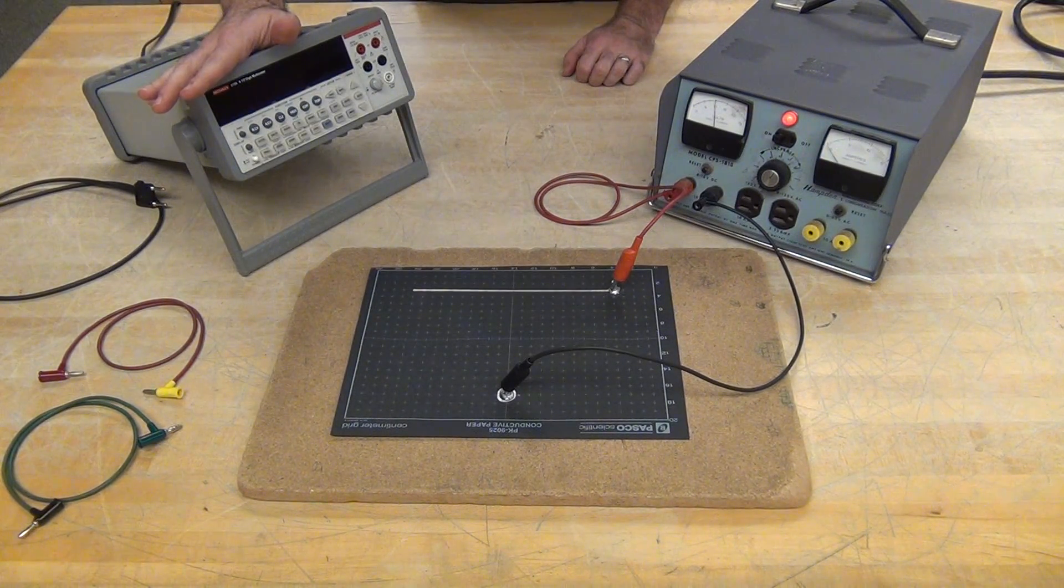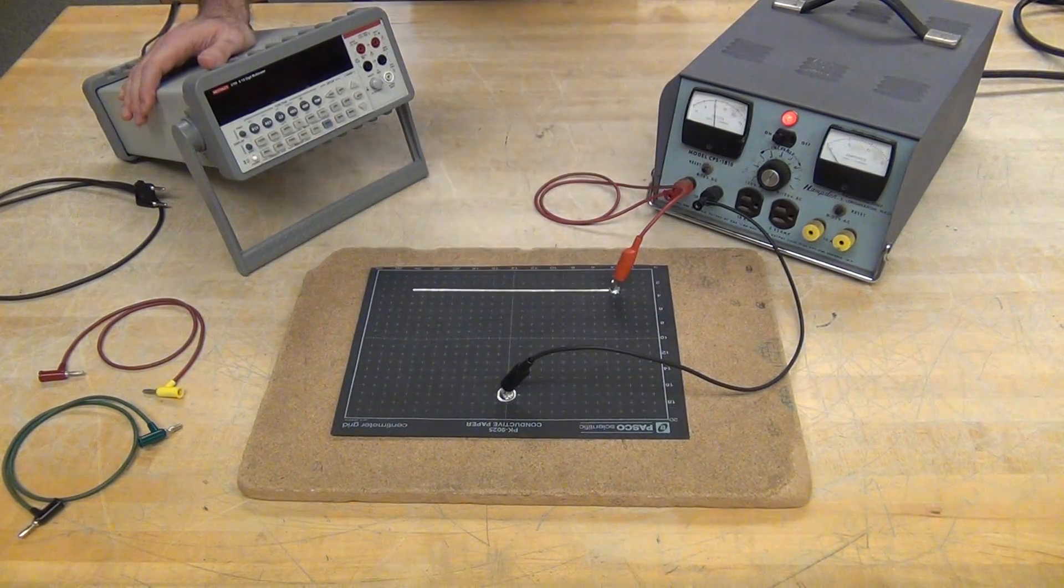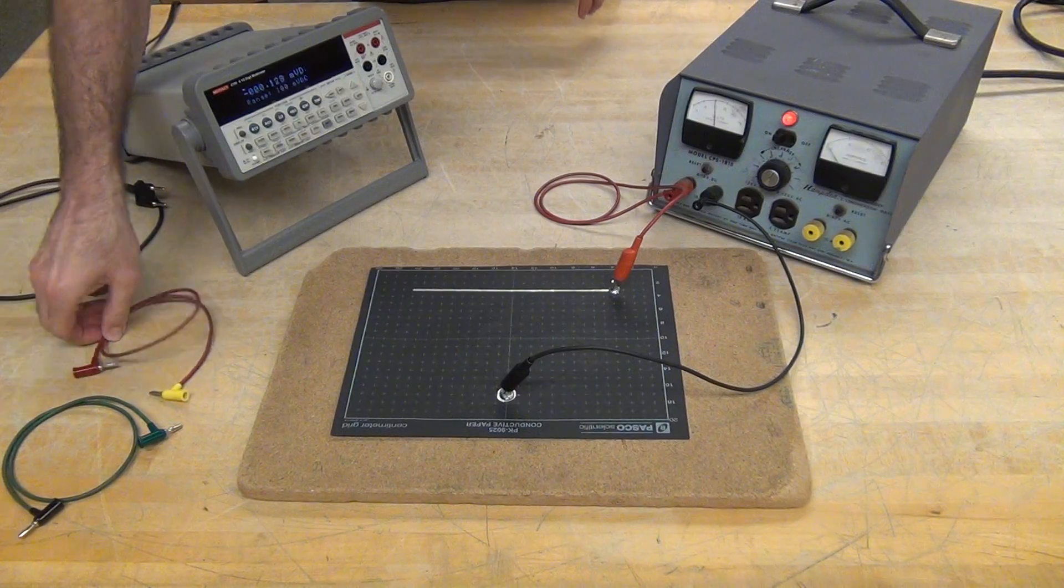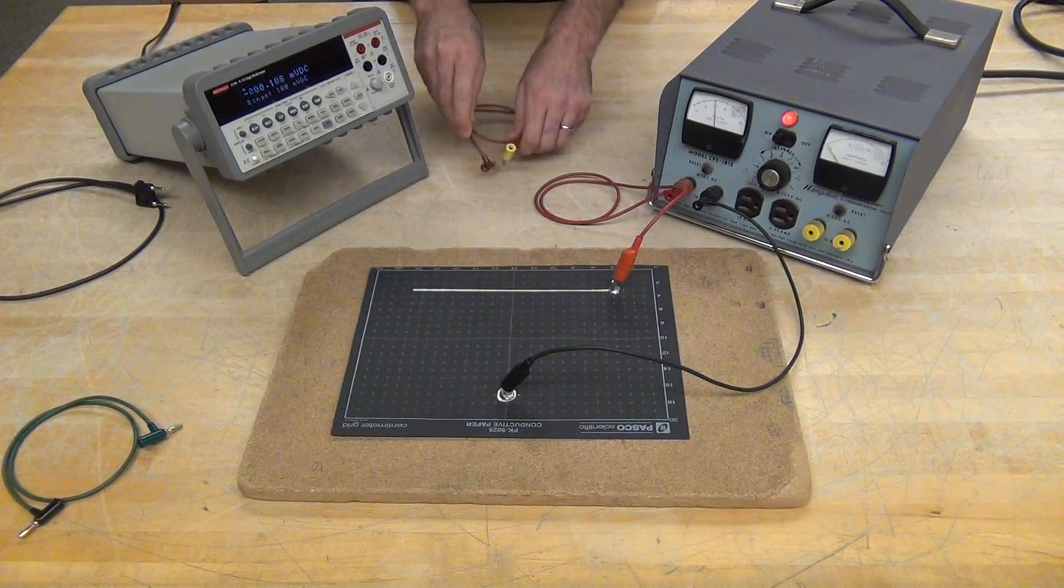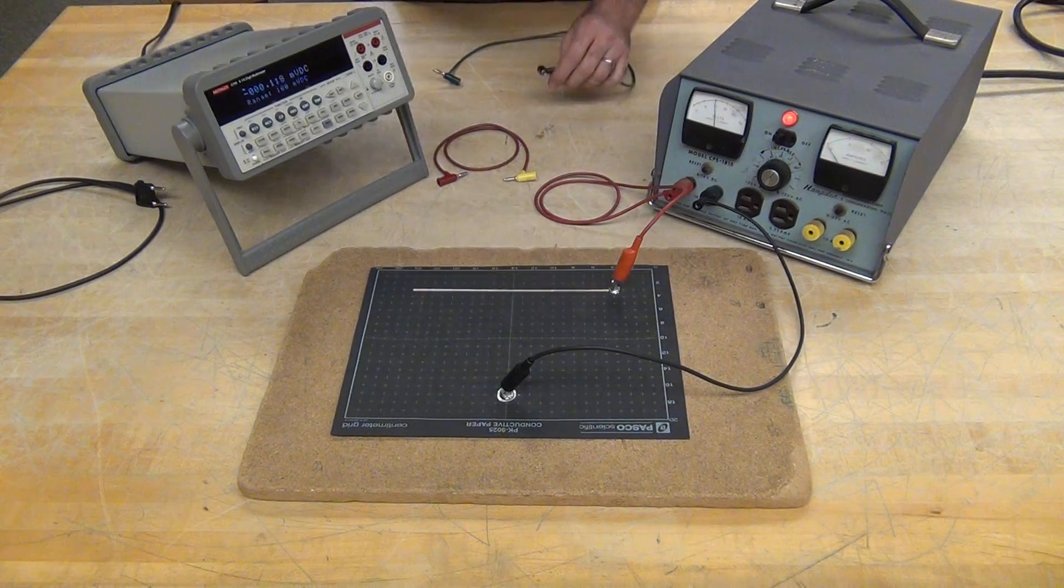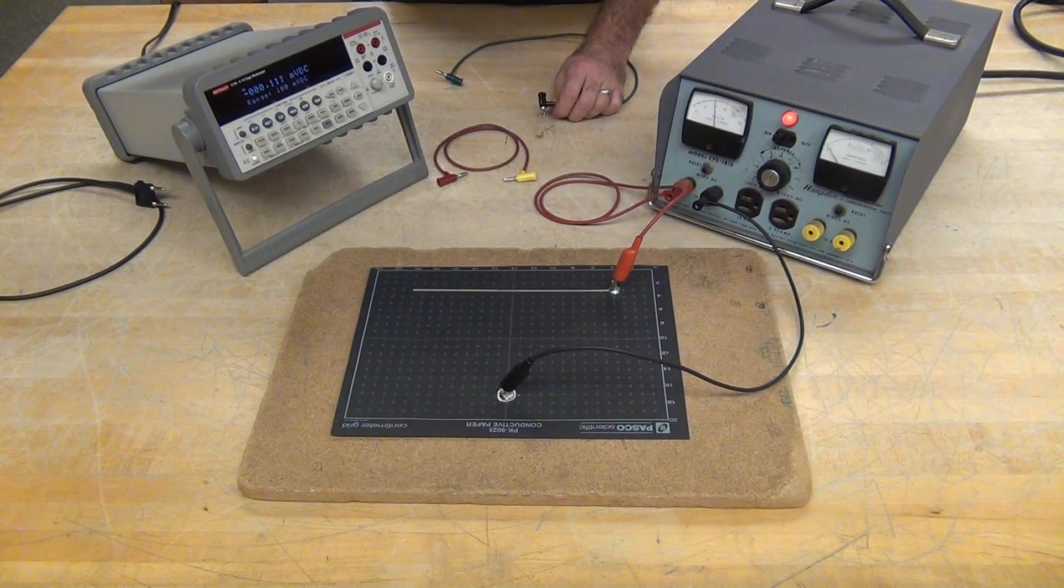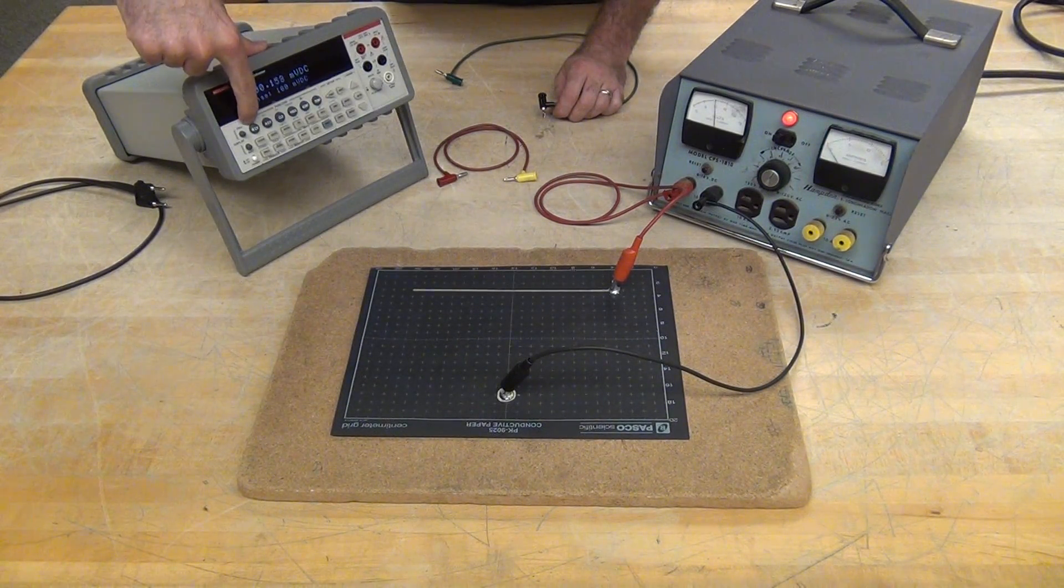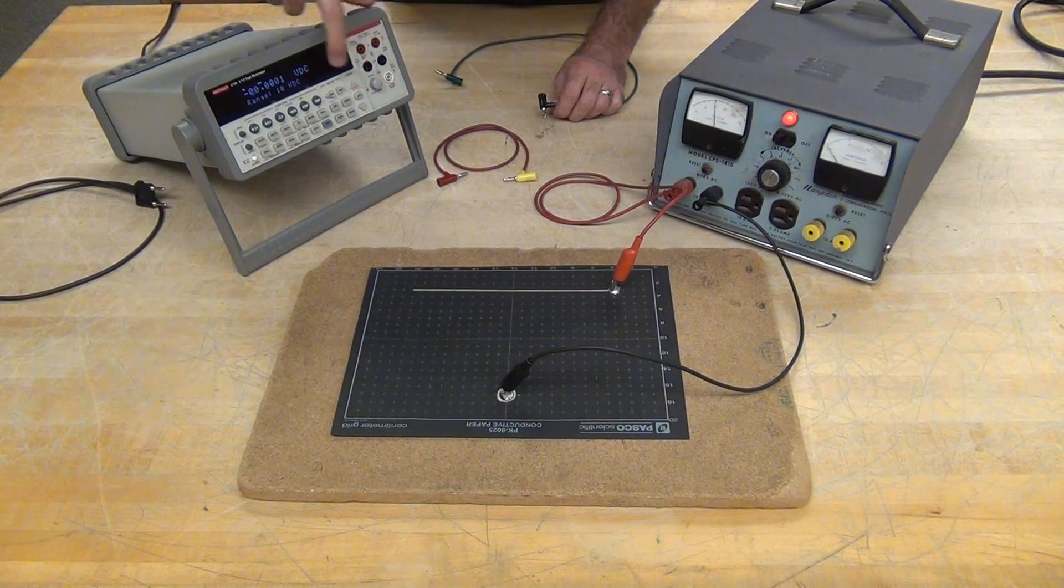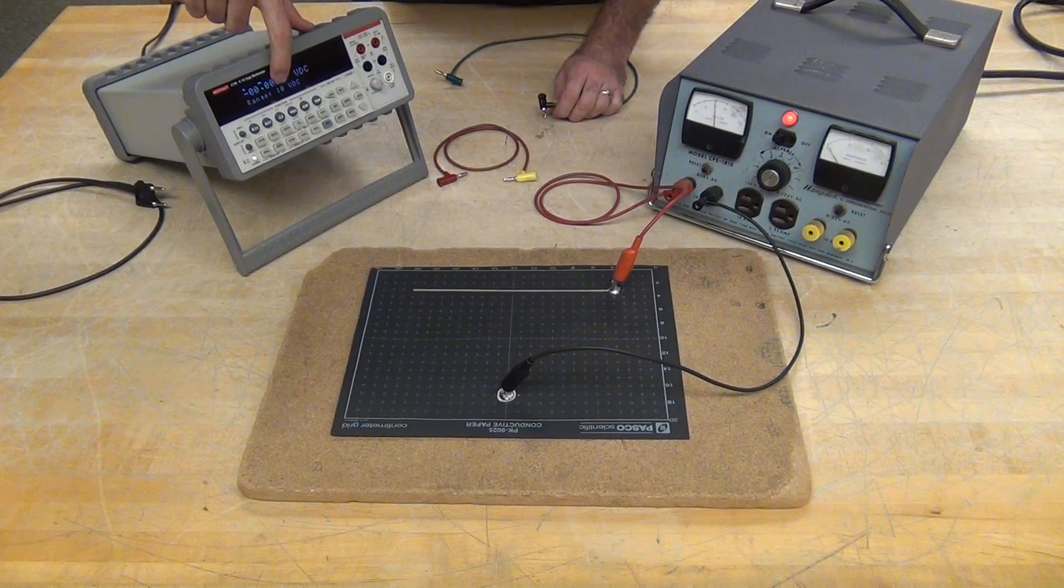I'll use our Keithley multimeter to turn it on. It's plugged into the silver outlets and I'll use two banana to banana plugs there. Making sure that I'm in the front section, I'm in DC volts and I'm going to set the range with the uprange button to 10 volts.